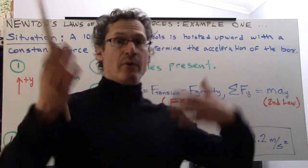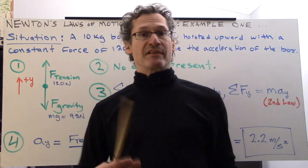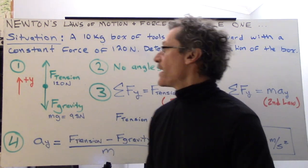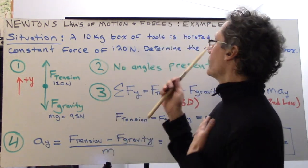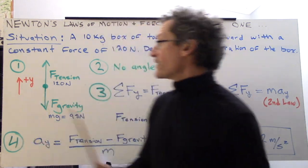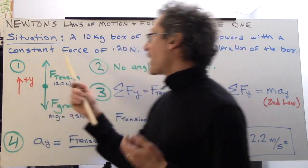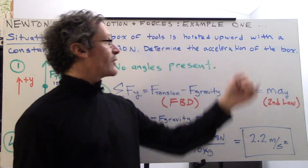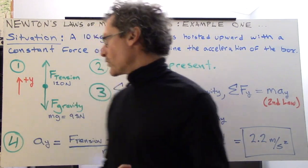And so here we go with example one. We have a toolbox that's hoisted upwards. The toolbox has a mass of 10 kilograms. And we're told that the hoisting force, it's actually tension in this case, you can imagine maybe a rope or chain that's pulling upwards, has a constant force of 120 newtons. What do we want to know? We want to figure out the acceleration of the box. So that's going to tell us something about its motion.